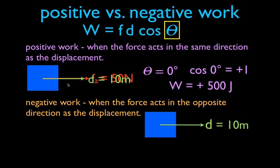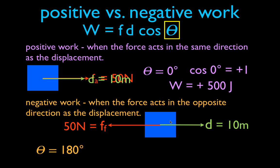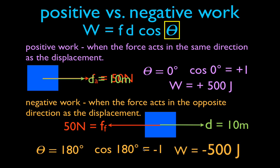Now let's look at a case for negative work. We have an object moving to the right with a friction force acting to the left. We want to focus on the friction force and the negative work. The displacement is to the right, the force is to the left, so theta — the angle between the displacement and the force — is 180 degrees. The cosine of 180 degrees is negative one. So it's 50 times 10 times minus one, meaning the friction force is doing minus 500 joules of work.